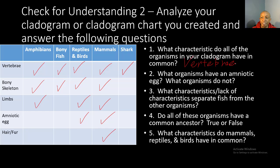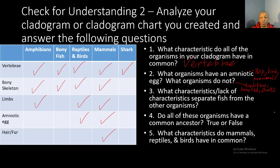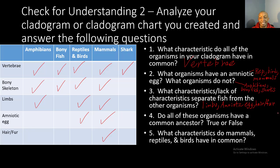Number two: what organisms have an amniotic egg? There are only three organisms on this chart that have an amniotic egg — those are reptiles, birds, and mammals. Number three: what characteristics or lack of characteristics separate fish from the other organisms? Fish do have a vertebrae and a bony skeleton, but they lack limbs, amniotic eggs, and hair or fur.